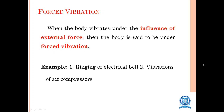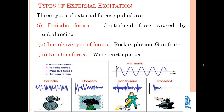When the body vibrates under the influence of an external force, the body is said to be under forced vibration. Some examples include ringing of an electrical bell and vibrations of air compressors. There are three types of external excitations: the first is periodic forces such as centrifugal force caused by unbalancing, and the second type is impulsive forces such as rock explosion and gun firing.